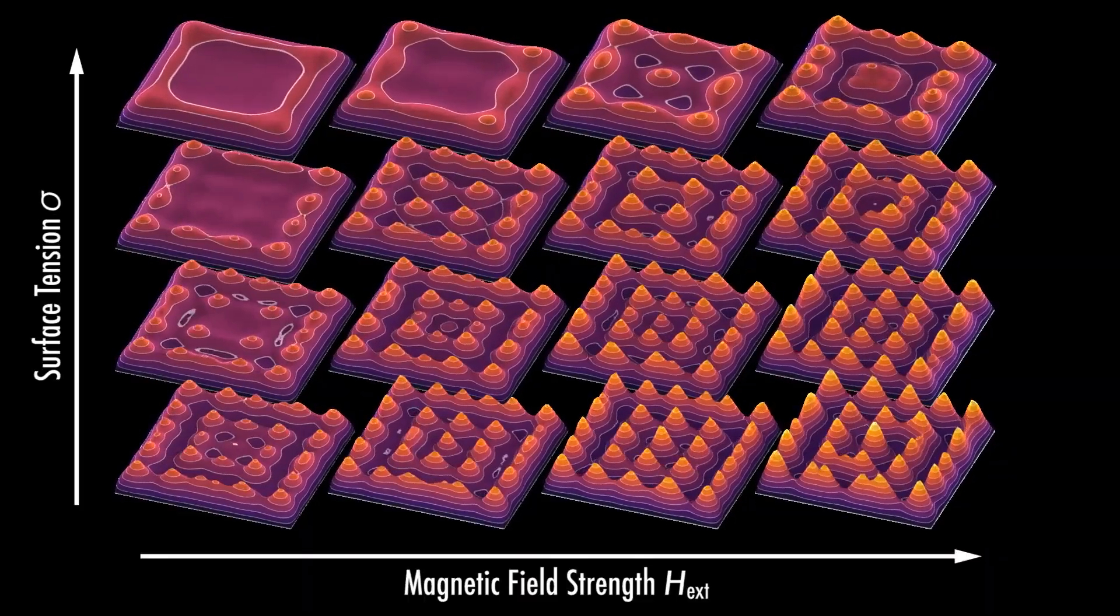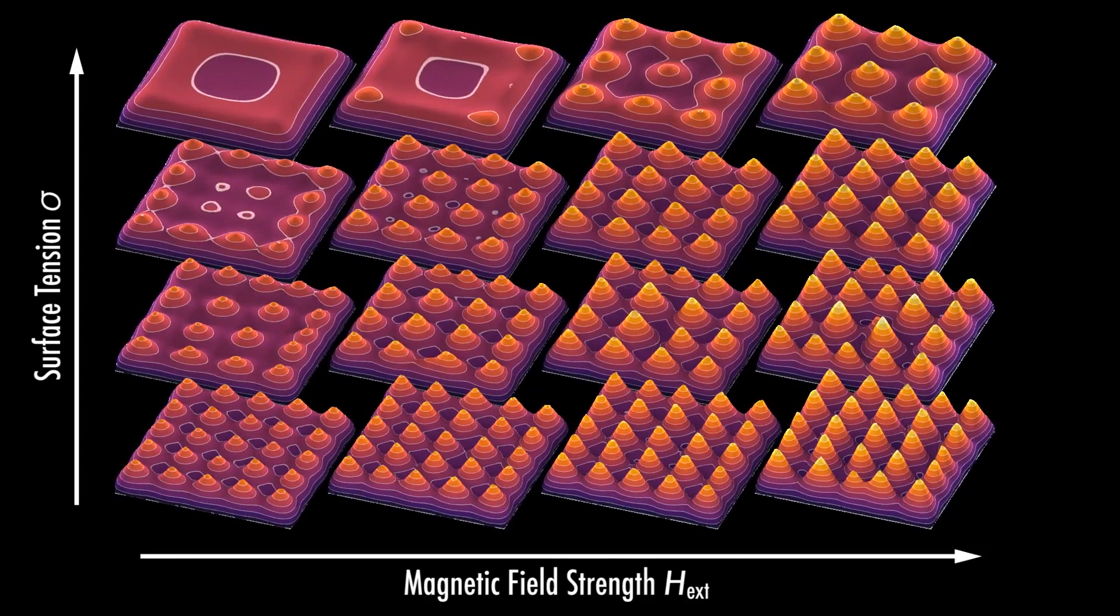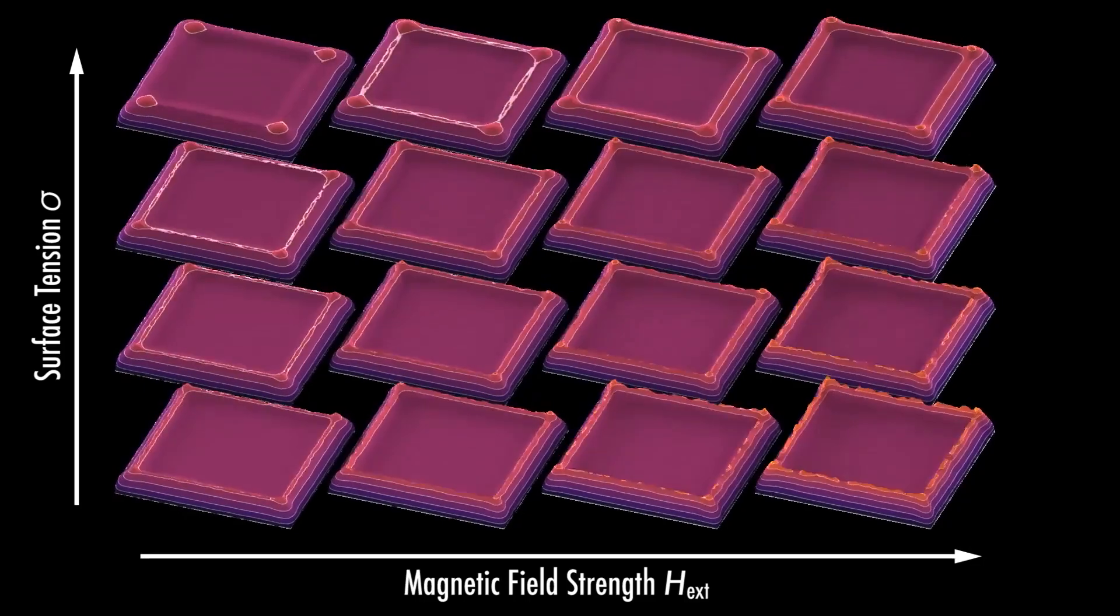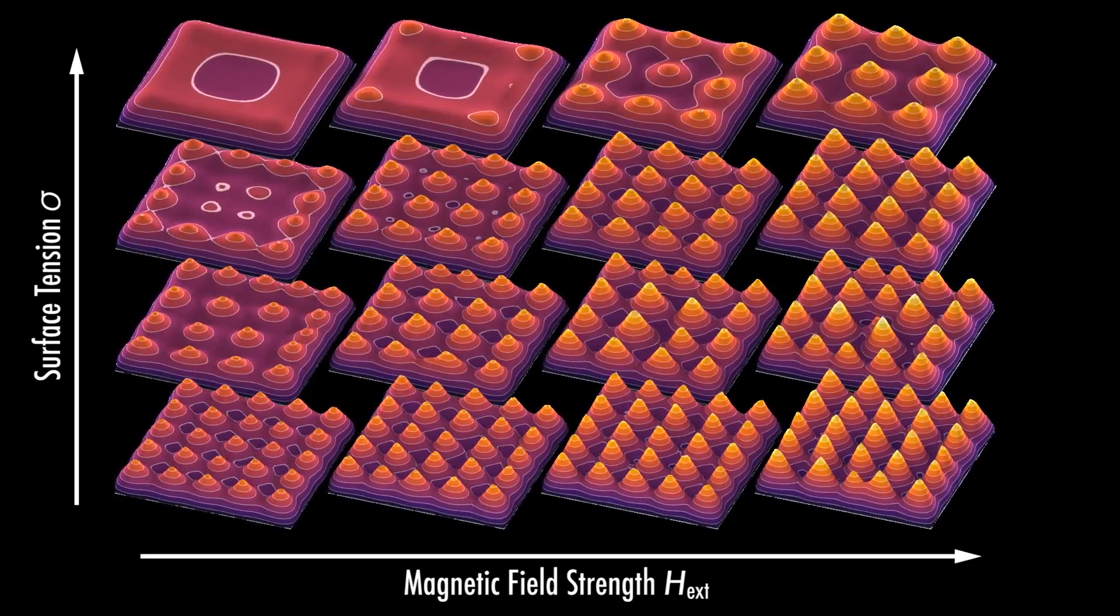We systematically measure surface patterns for different surface tension and magnetic field strengths. A stronger magnetic field results in a larger amplitude, while stronger surface tension increases the wavelength. The characteristic pattern only forms if the magnetic field exceeds the critical field strength.